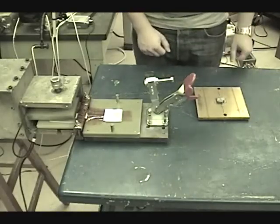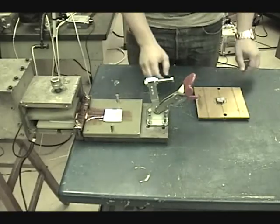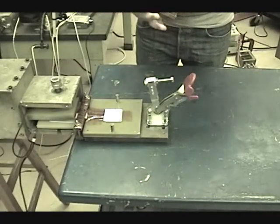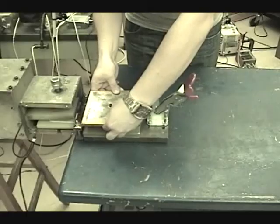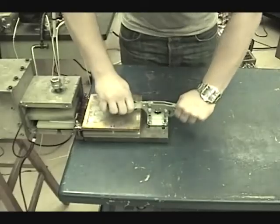To set up the experiment, the blank is first placed in the center of the coil. The shearing die is placed on top, and the setup is attached securely using the clamp.